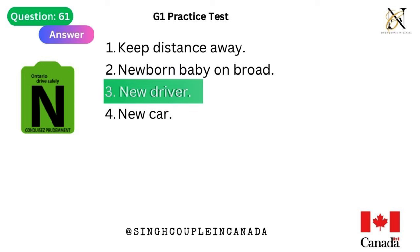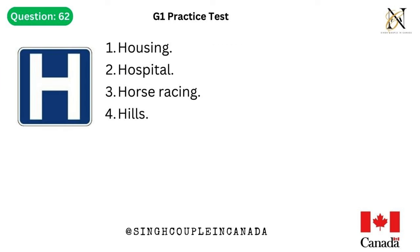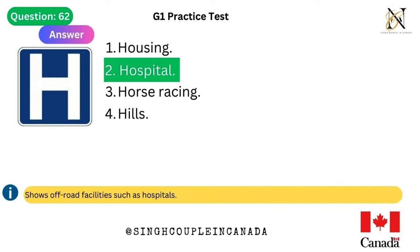Question 62. This traffic sign means: 1. Housing. 2. Hospital. 3. Horse racing. 4. Hills. Answer is 2. Hospital — shows off-road facilities such as hospitals.